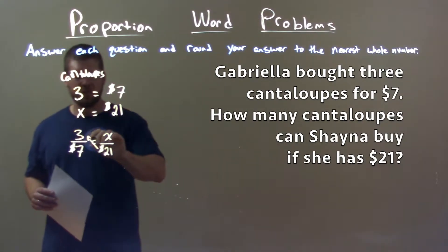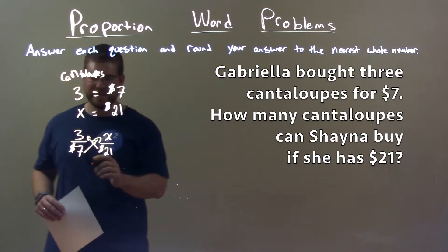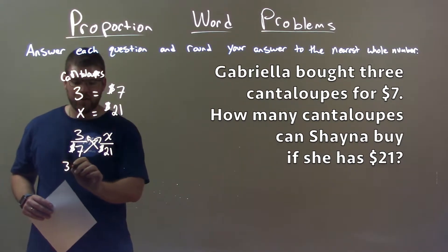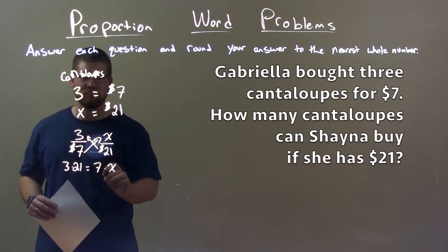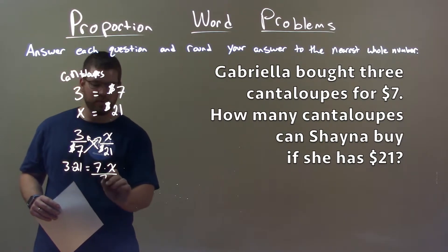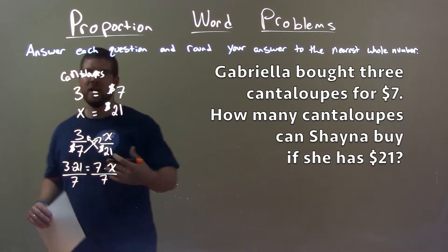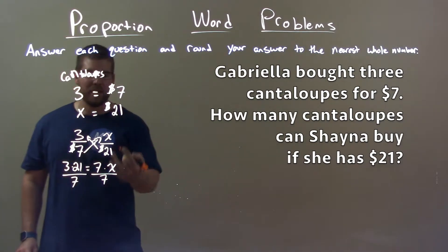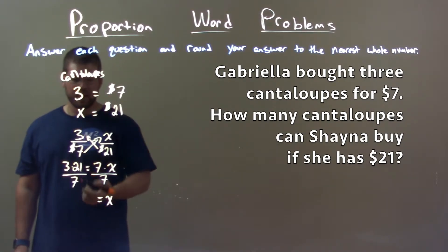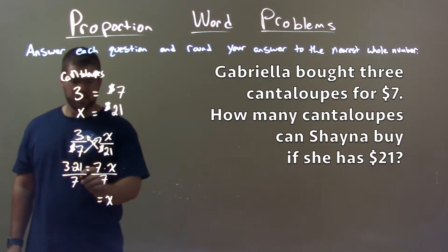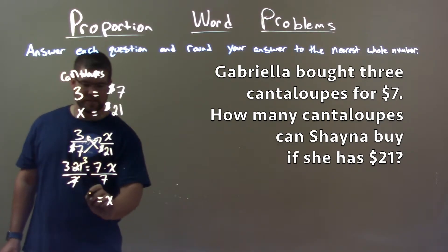We cross multiply first. I'm not going to actually multiply 3 times 21 — you'll see in a second. 3 times 21, keep it separate, equals 7 times X. Now I need to divide by 7 on both sides, and hopefully now you can see why I didn't multiply 3 times 21 — I knew the 7 was going to come back over. X is by itself on the right, and 7 goes into 21 three times. So now we have 3 times 3, which is 9.